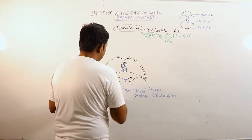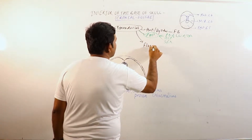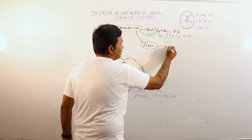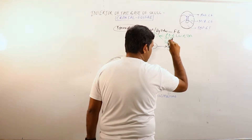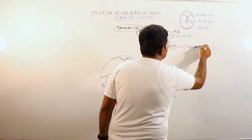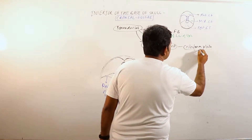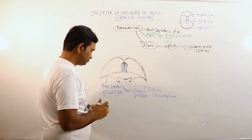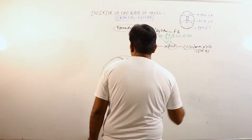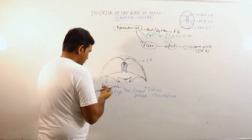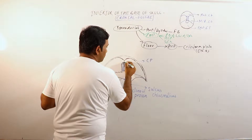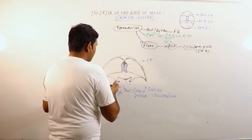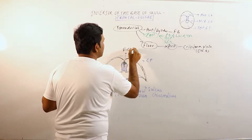Now the floor. The floor in its medial area is formed by the cribriform plate. The cribriform plate is part of the ethmoid bone. It is a perforated plate through which the olfactory neurons emerge out. The anterior margin of the cribriform plate articulates with the frontal bone, and there is the foramen cecum in between.